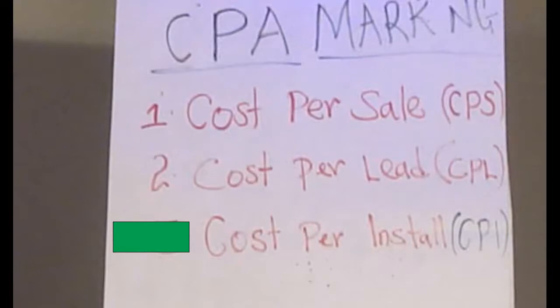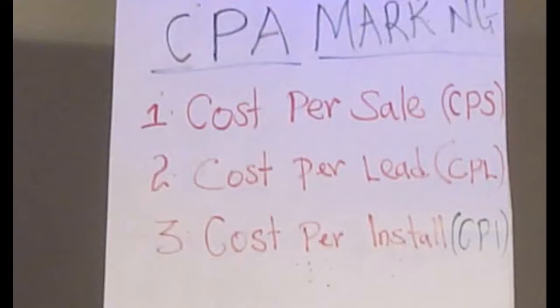The third type is cost per installation, or CPI. For every installation that a customer completes — for example, if someone follows your link and downloads an application or software — that is a cost per installation, and you get a specific amount of money paid to you for every installation. This differs from affiliate marketing, which is all about making a sale. The difference between cost per sale and affiliate marketing is that CPA has a specific fixed payment, while affiliate marketing varies depending on the product type and price.